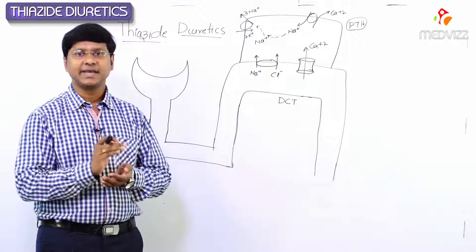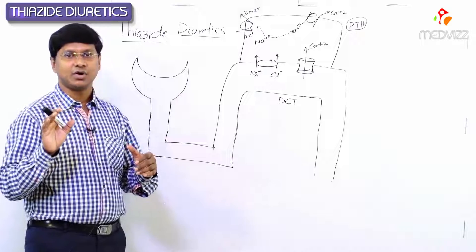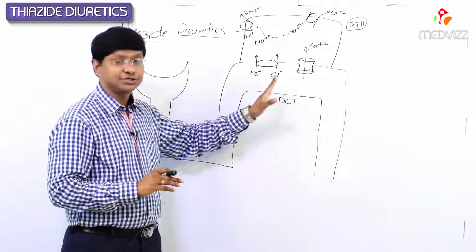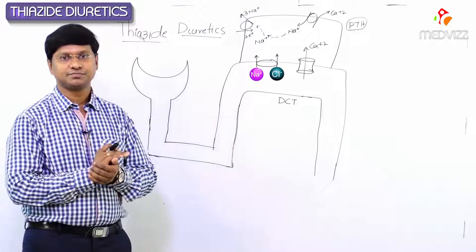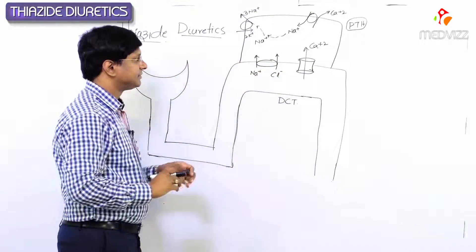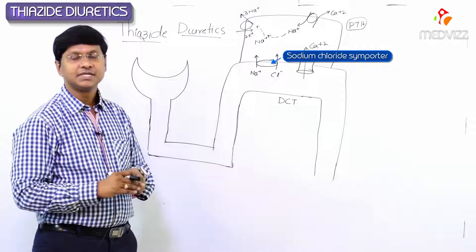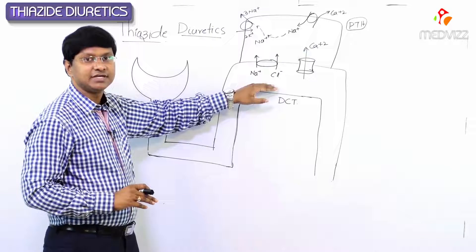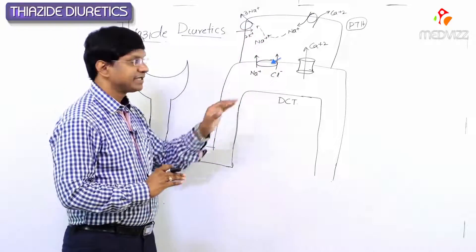Now if you see the mechanism of action of these drugs — thiazide diuretics mainly act on the distal convoluted tubule. This part of the distal tubule is impermeable to water and absorbs only the solutes. We have a channel called the sodium chloride symporter. In a normal individual, when fluid reaches the level of the distal convoluted tubule, sodium and chloride are reabsorbed through this symporter mechanism.